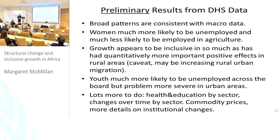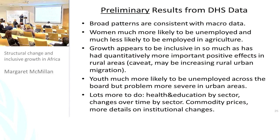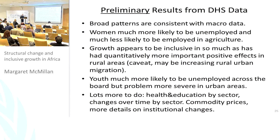Preliminary results from the DHS data: we obviously have a lot more work to do, but the broad patterns are consistent with the macro data. Women are much more likely to be unemployed and much less likely to be employed in agriculture. Growth appears to be inclusive insofar as it has quantitatively larger effects on employment in rural areas, though one caveat is that it could be increasing rural-urban migration. Youth are much more likely to be unemployed, and female youth in urban areas are the worst off. The next step is to look at health and education by sector to get welfare indicators by sector, rather than TFP, to better interpret what changes in employment across sectors mean for Africa.